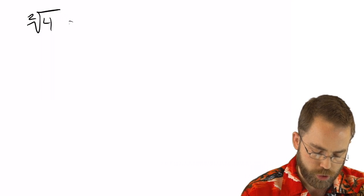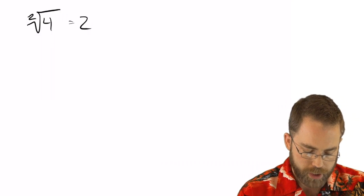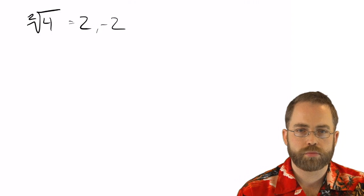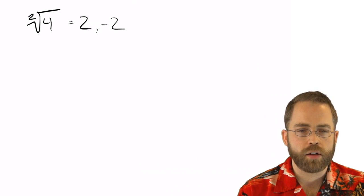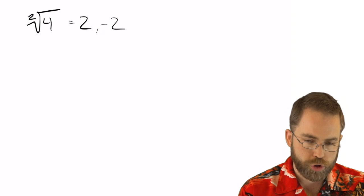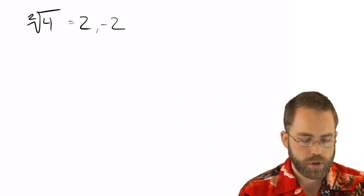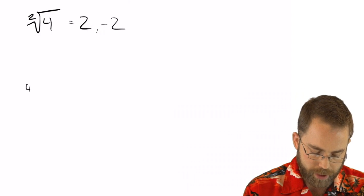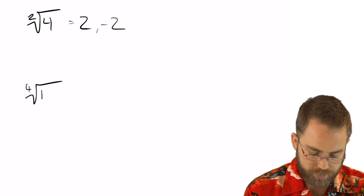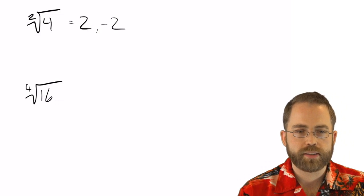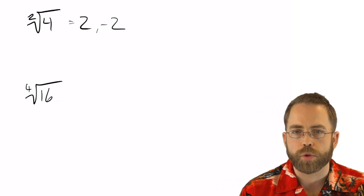Okay. So De Moivre and some other guys who were thinking about math, they said, okay, we know that the square root of 4 is 2, but it can also be negative 2. That works. And so then, okay, so there are two solutions to a square root. And then we think about, okay, well, what about a fourth root of 16?